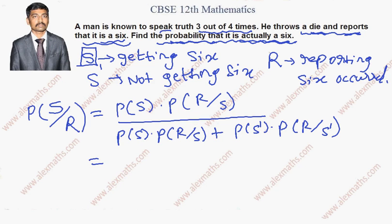Now fill the value of the probability. P of S is getting 6. The value of getting 6 probability is 1 by 6 into what is the meaning of P of R by S?